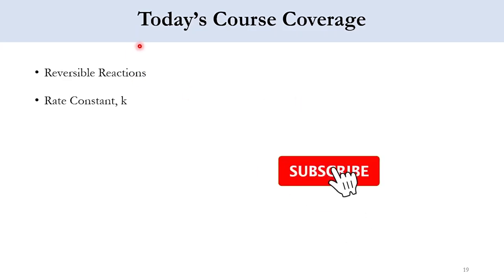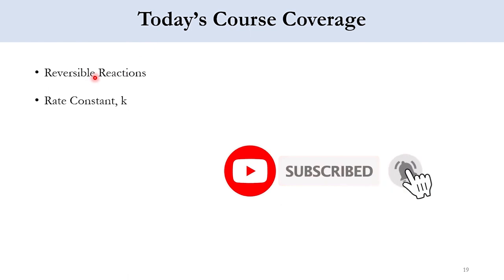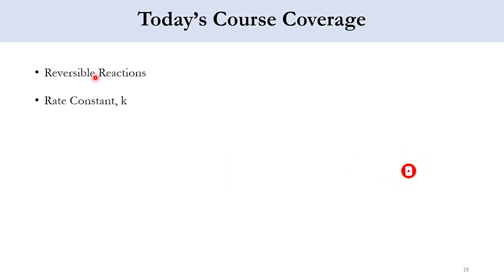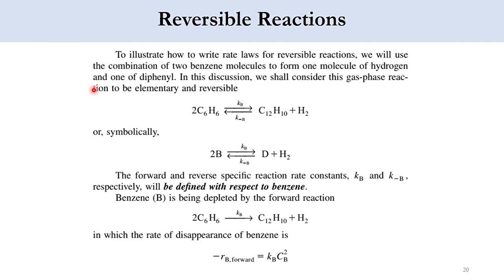In today's course coverage we will start from reversible reactions and do a derivation mentioned at the end of lecture number 10, then move to the rate constant. To illustrate how to write rate laws for reversible reactions, let's assume a reaction where two moles of benzene react to form one mole of hydrogen and one mole of diphenyl. It's a reversible reaction, so the forward reaction rate constant is K_B while for the reverse side it is K_{-B}.